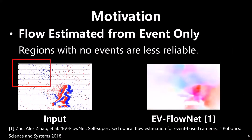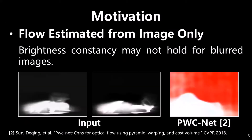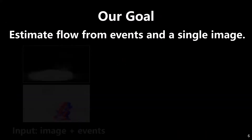In the task of estimating optical flow, event-only based methods produce less reliable flow in regions with no events. For image-only based methods, brightness constancy may not hold for blurred images.